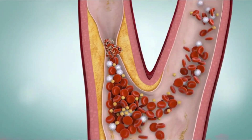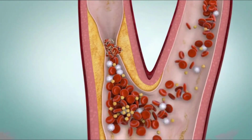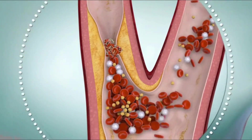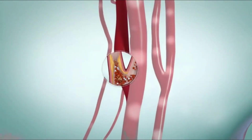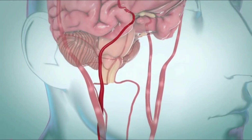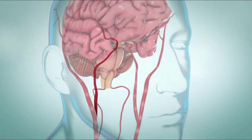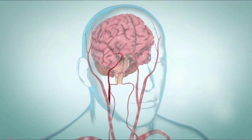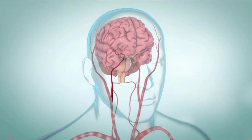Blood clots can also travel from another part of your body to your brain. If an artery in the brain is blocked, the surrounding tissues won't get the oxygen and nutrients they need. This causes the neurons in your brain to die within minutes.